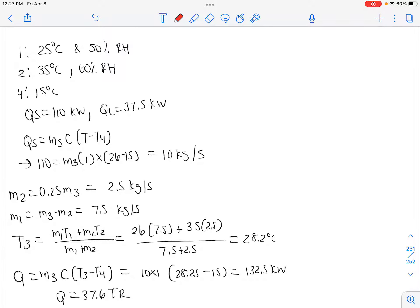We'd like to determine the refrigeration capacity in TR. At point one from our diagram, we have 25 degrees Celsius and 50% RH, which is our relative humidity.